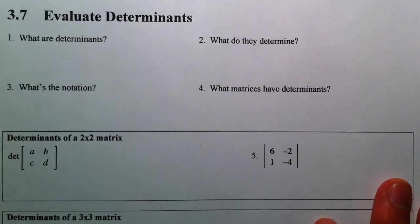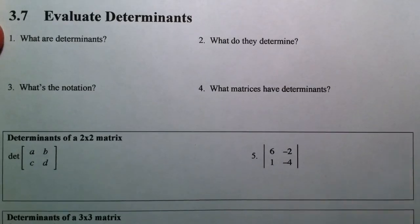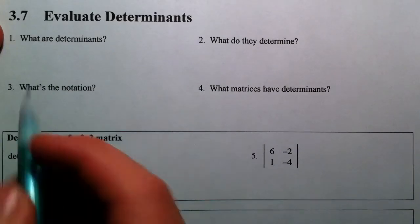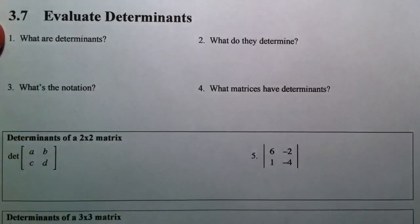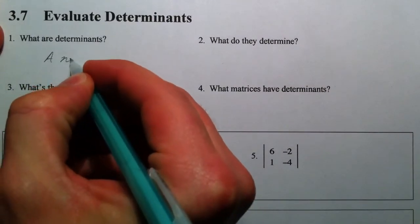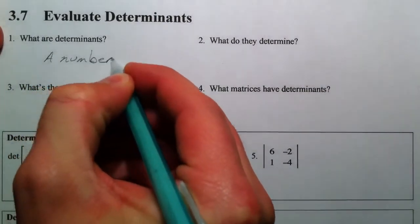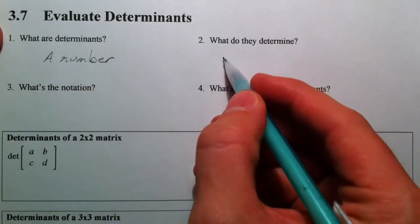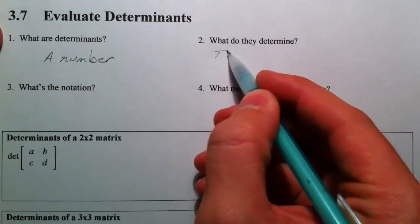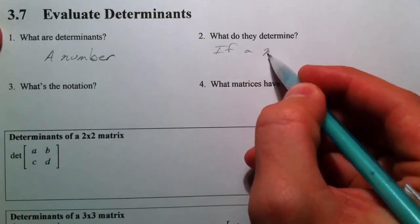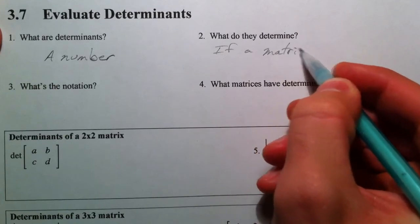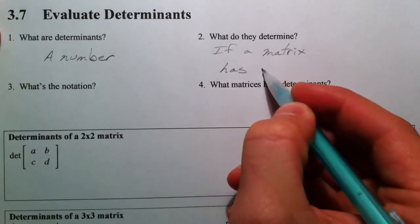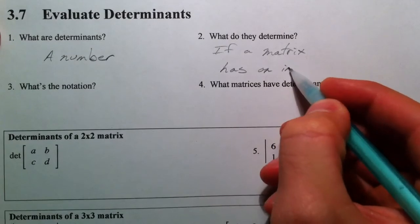We've been talking about matrices, and I want to talk about determinants. There's two big things — determinants and inverses — that we're going to use in solving and using matrices. So what is a determinant? It's a number. When you take the determinant of a matrix, you'll get a number. What is it that they determine? Well, it determines if a matrix has an inverse, and we'll get back to that.